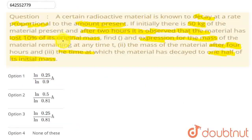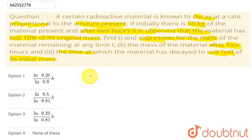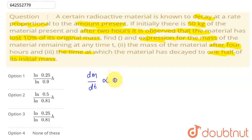So students, in this question, we have given that a certain radioactive material is known to decay at a rate proportional to the amount present. So this we can write in mathematical terms as: the decay rate, which is dm/dt, is proportional to the amount present, which is mass m.